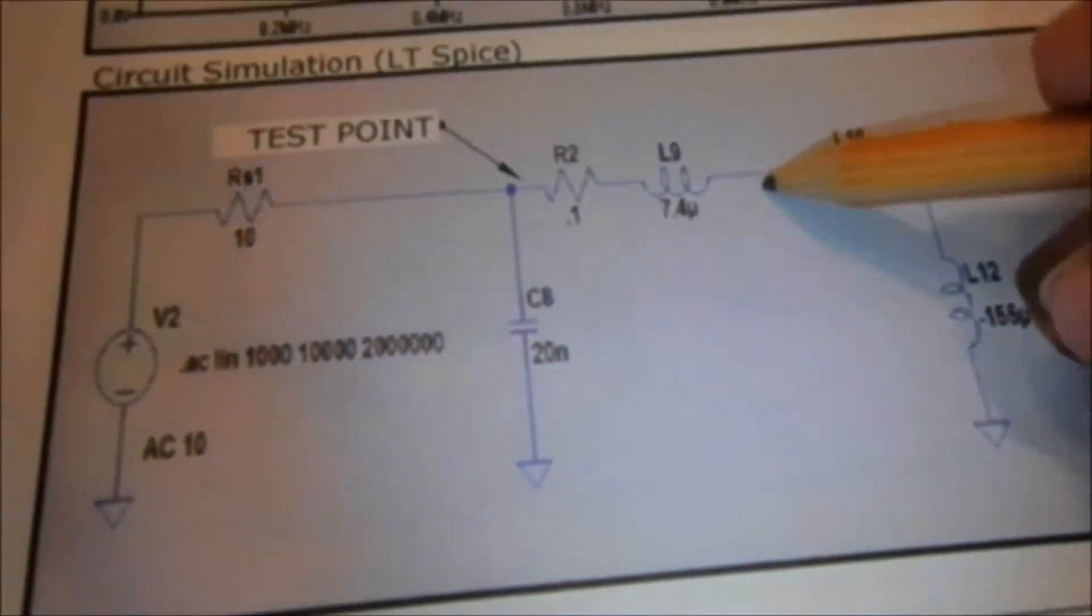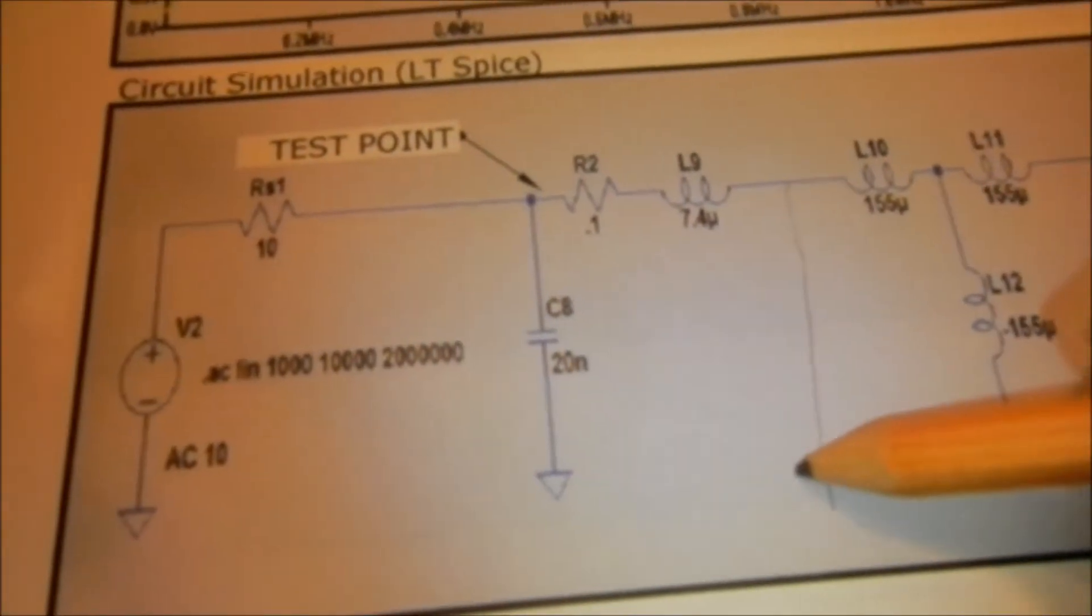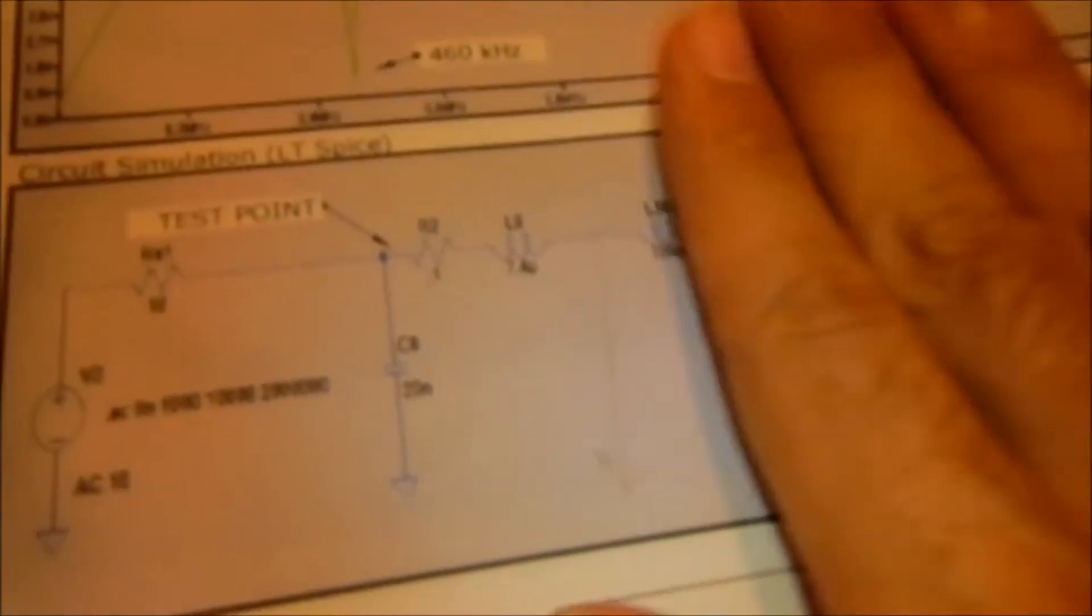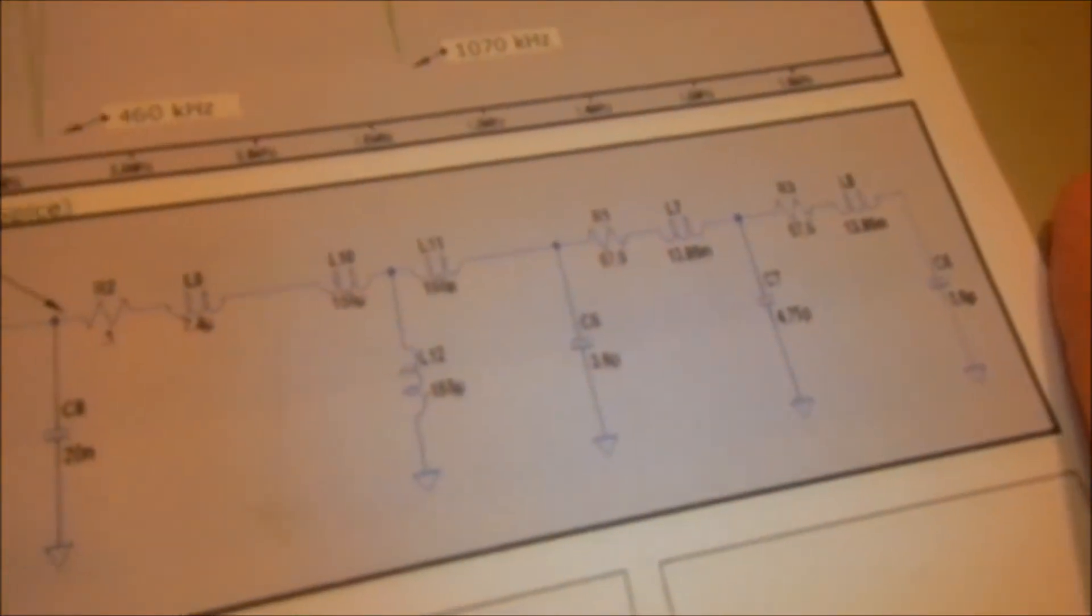So essentially, with the secondary of the Tesla coil out of the circuit, our circuit is more or less this, where we've excluded all the mutual inductance in the secondary coil.